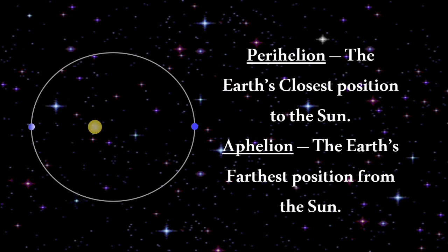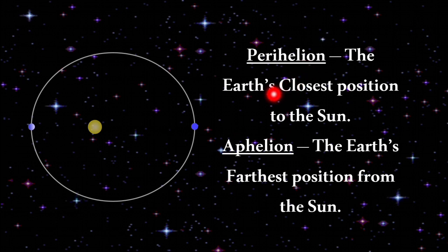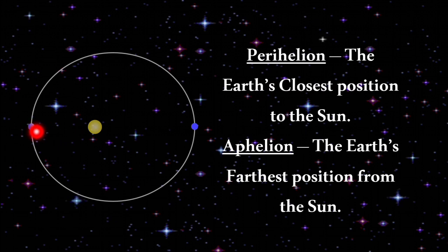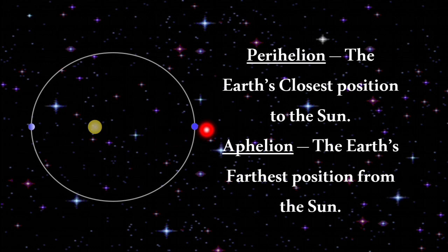Perihelion means the Earth's closest position to the sun, whereas aphelion means the Earth's farthest position from the sun.